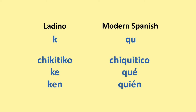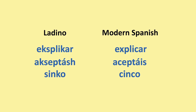Ladino is much more phonetic. So even though it looks very different written in Ladino, it's pronounced very similarly. For example, 'explikad' and 'explicad' — both Ladino and modern Spanish would pronounce it the same way. 'Asetash' and 'aceptáis'. 'Sinko' and 'cinco'.